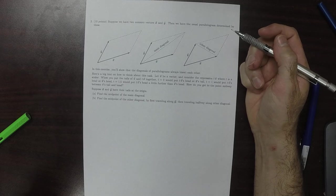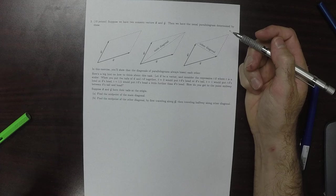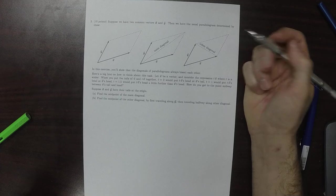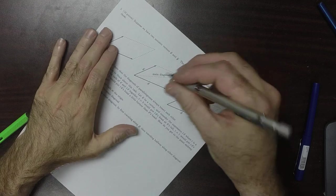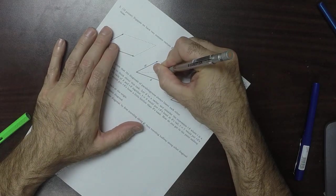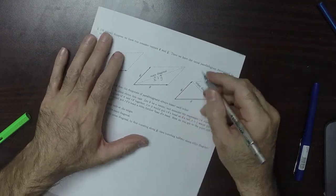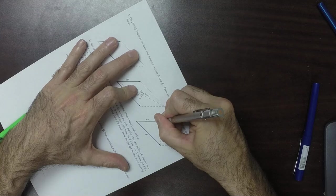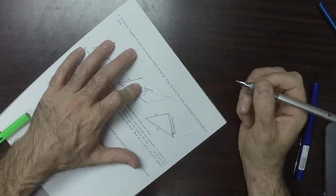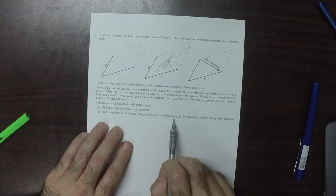So we want to show that the diagonals bisect each other. Well, here's the main trick—is that this is, the main diagonal is x plus y. That's its formula. And then this one, if we consider this one to be pointing that direction, what does the instruction say? First traveling y, then traveling... okay, yeah.